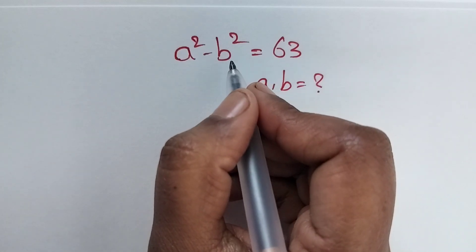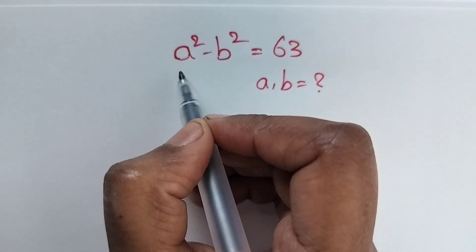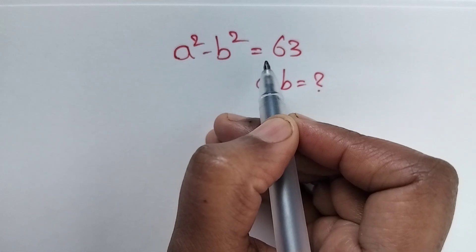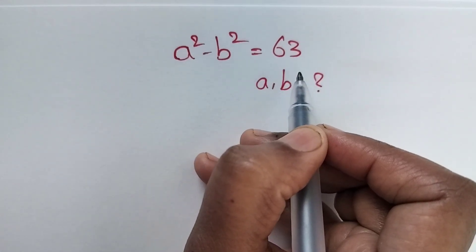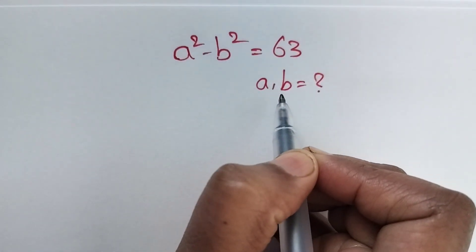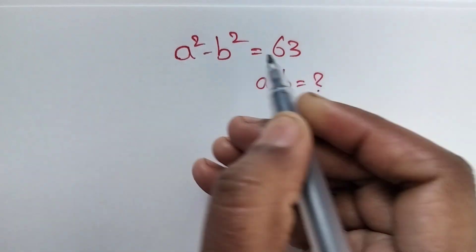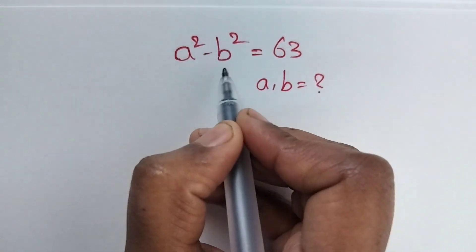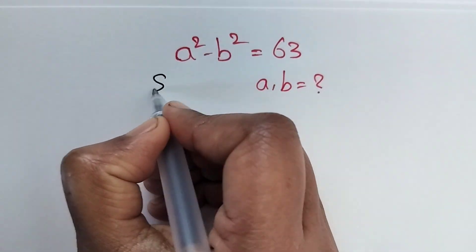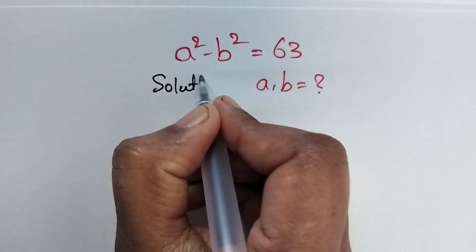Hello everyone, welcome back to our channel. Here we have one problem: a squared minus b squared is equal to 63. In this problem we need to find the values of a and b. Let's look at the solution.